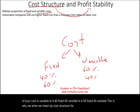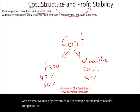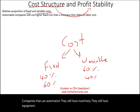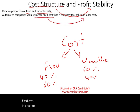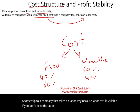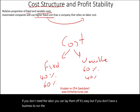For example, automated companies — companies that use automation — will have machinery and equipment, and they will have to invest in those assets in order to have automated machineries. They will have a high fixed cost relative to a company that relies on labor. Because labor cost is variable: if you don't need the labor, you can lay them off. But if you don't have business to run the machine and you paid so much for that machine, you cannot turn around and sell it.